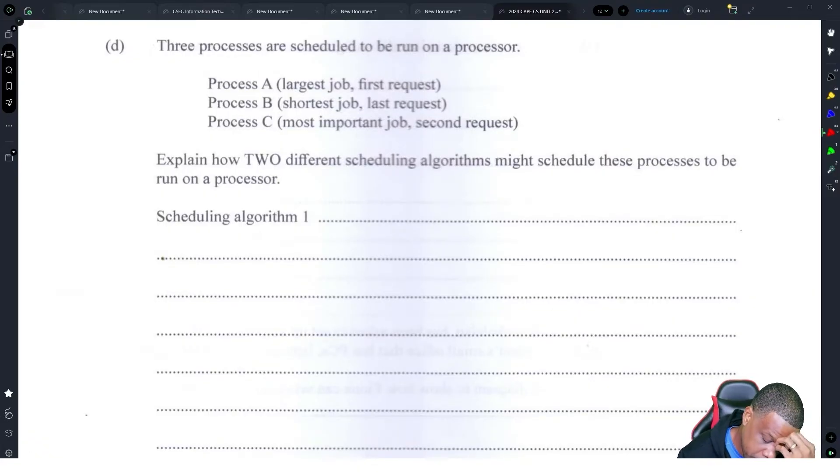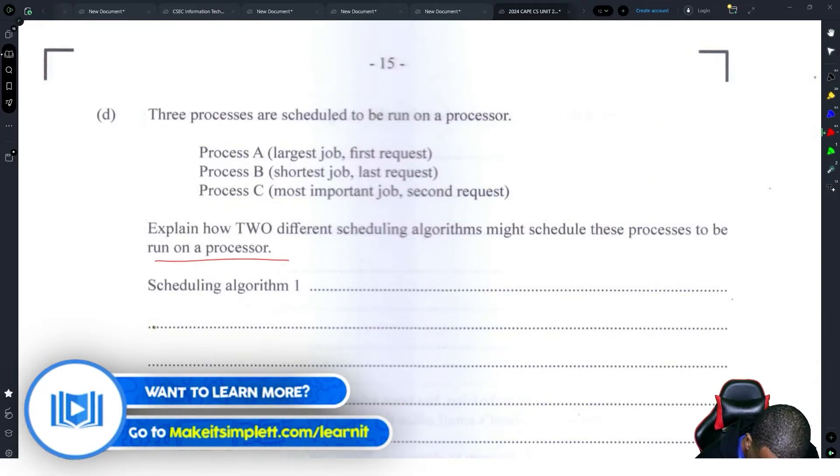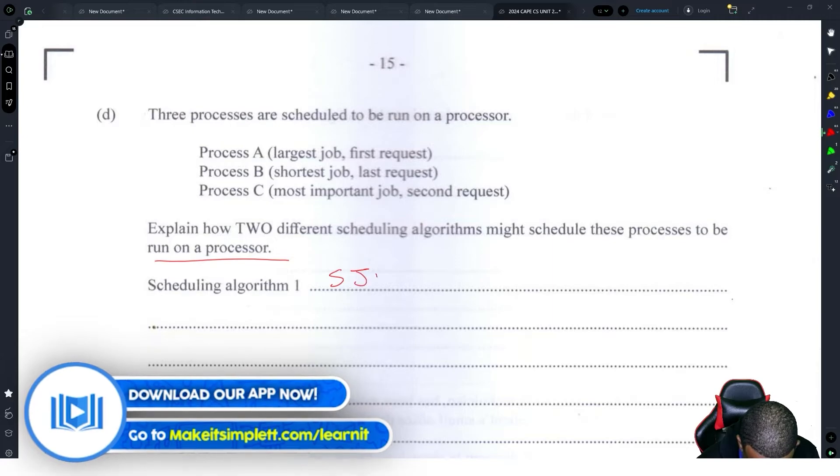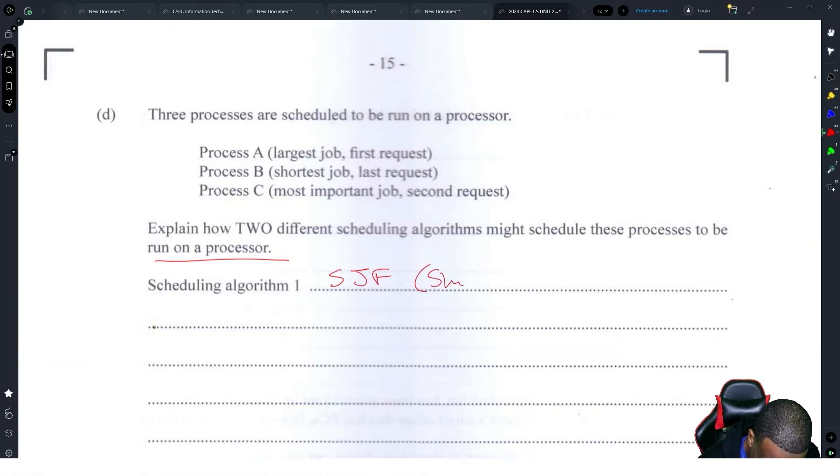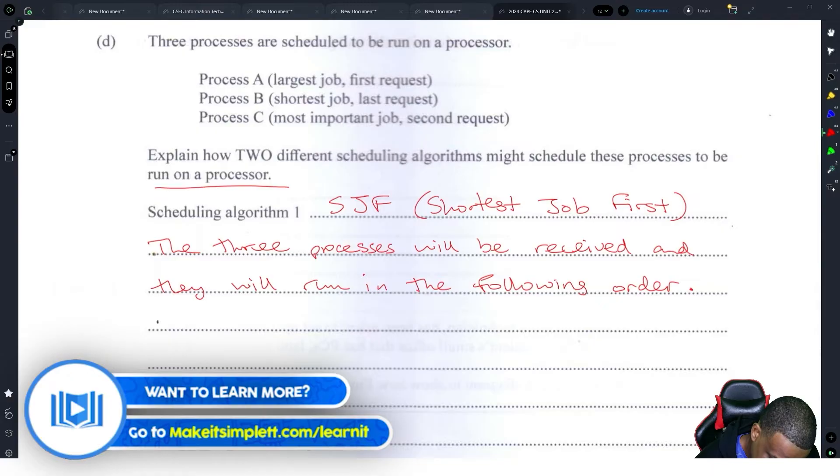Processes are scheduled to be run on a processor. Process A, shortest job, first request. Process B, shortest job, last request. Process C, most important job, second request. Explain how two different scheduling algorithms might schedule these processes to run on a processor. Let's just do scheduling algorithm SJF, shortest job first. The three processes will receive and they will run in the following order: process B.